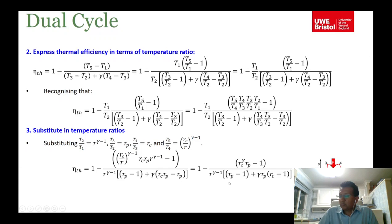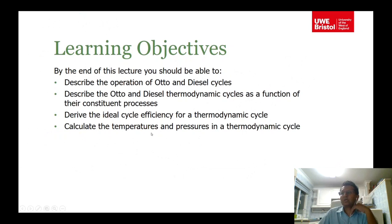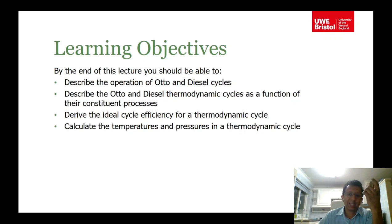Substituting into the efficiency expression gives the dual cycle thermal efficiency: eta_thermal = 1 - [r_c^gamma·(r_p - 1)] / [r_v^(gamma-1)·(r_p - 1 + gamma·r_p·(r_c - 1))]. The dual cycle is more realistic than either the Otto or diesel cycle alone, combining elements of both.